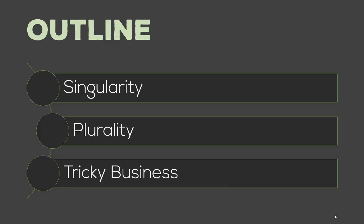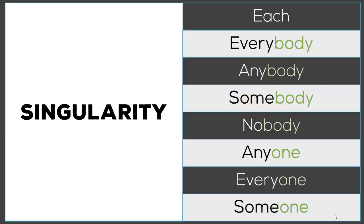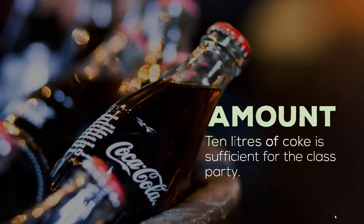Singularity. Every time we look at words like each, everybody, anybody, somebody, nobody, anyone, everyone, someone — look carefully, there's the word body and one. One is singular, body is singular, so it's doubly singular. That's one way to learn about singularity. Quick tip: look for the one and body. When we talk about one amount, we are talking about singularity.